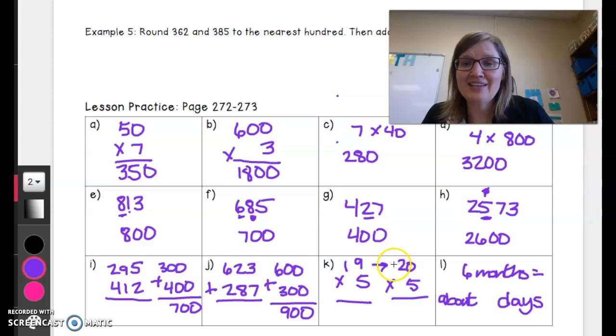So I round 19 up to 20 and then I multiply. It's even easier because I say 2 times 5 is 10 and then I put down another zero. There are about 100 musicians.